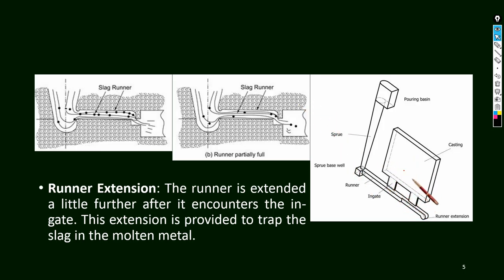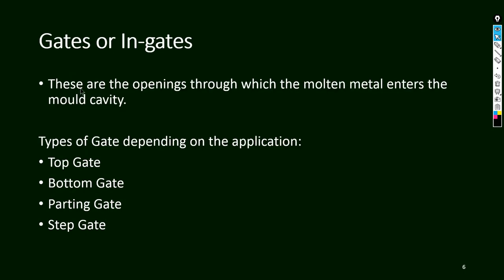Next we will talk about gates or in-gates. There are not only one gate — there may be many gates to enter into the mold cavity, depending on the size of the mold cavity. If the size is much bigger, we require many paths through which molten metal will enter. These are the openings through which the molten metal enters the mold cavity.